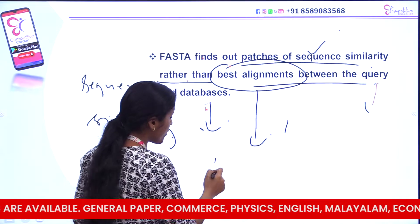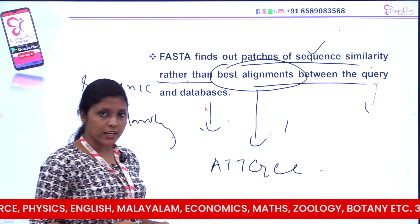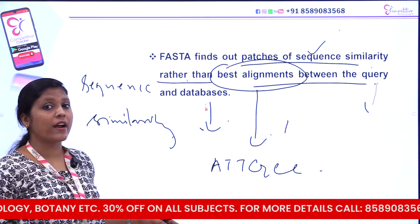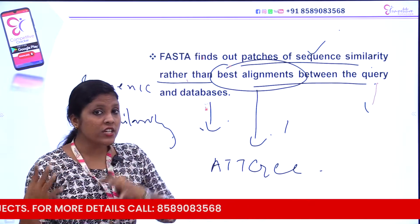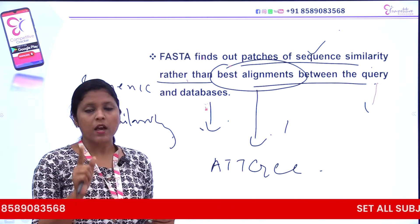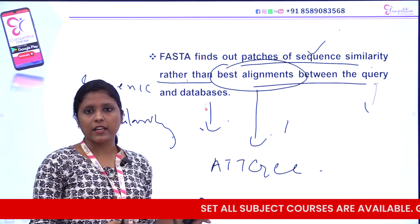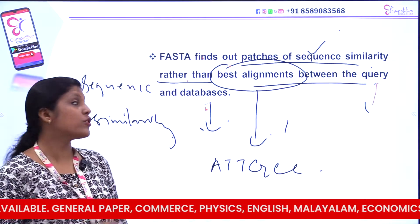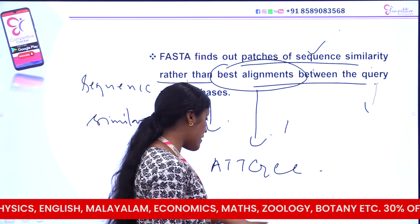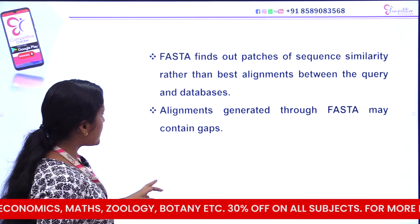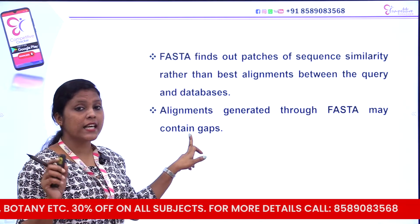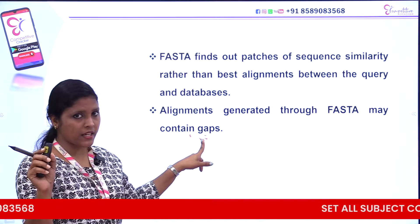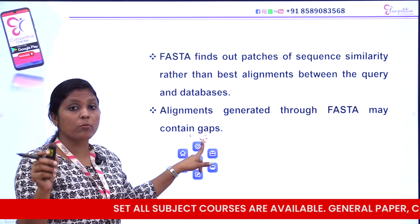Here we have a nucleotide sequence — A, T, G, C — a nucleotide sequence. We are looking at mutations and locations. If you are looking at the sequence alignment in each sequence, check the sequence similarity — check everything in FASTA. What are the alignments? There are gaps. In these gaps, if you ask FASTA, you can do the alignments and handle the gaps.